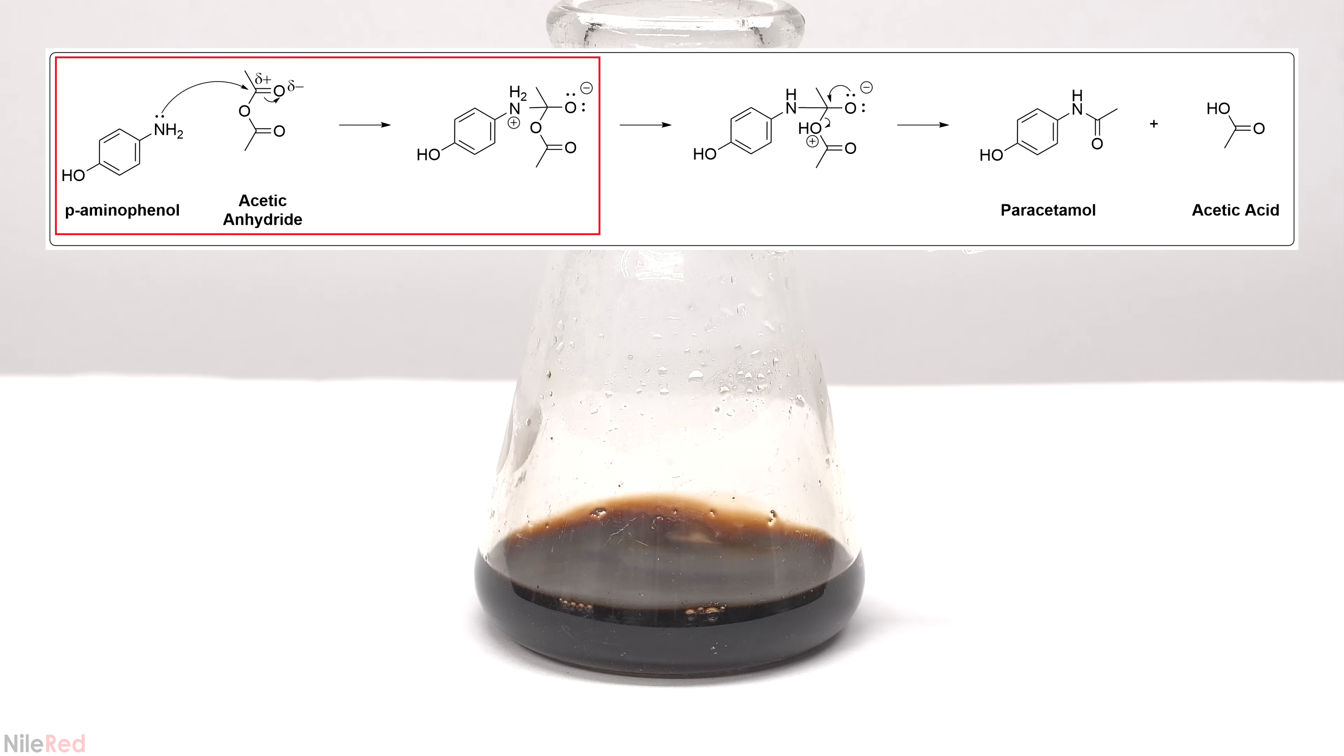In terms of the mechanism, the first step is the attack of the carbonyl by the primary amine. The reason this occurs is because the nitrogen has a free electron lone pair that can attack the partial positive of the carbonyl. This leads to the formation of this intermediate molecule and the new carbon-nitrogen bond.